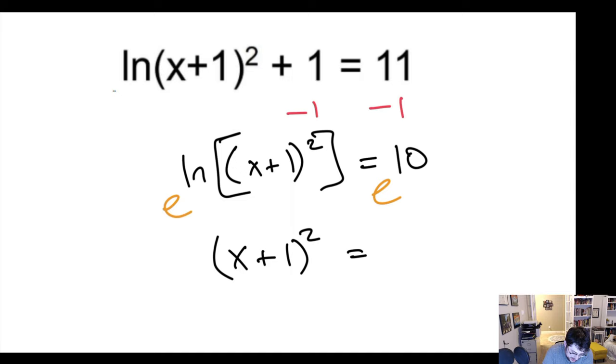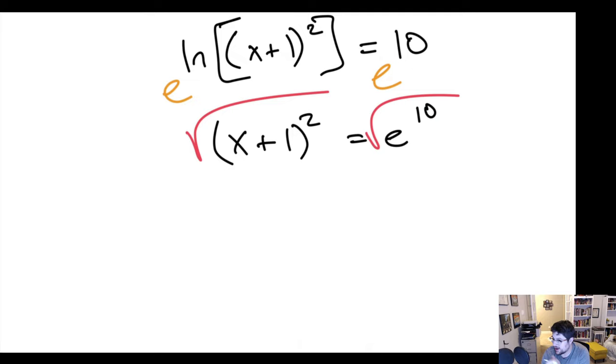So we should take a square root. Now square roots essentially divide your exponents in half. We haven't really covered. Well, okay. Square root is a power of 1 half, right? And power to the power multiplies essentially halves your exponents. So we would be left with x plus 1 equals e to the 5th. And then just subtract 1. We have x equals e to the 5th minus 1.